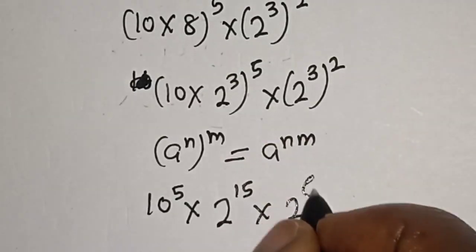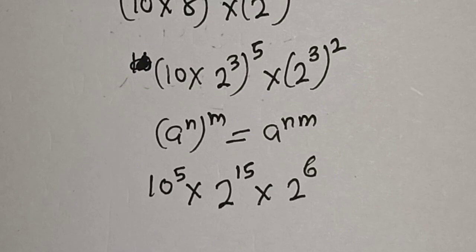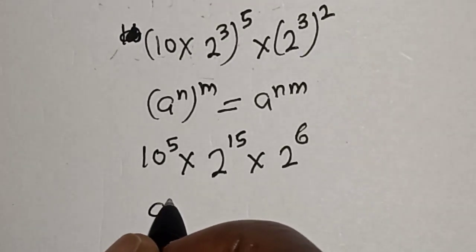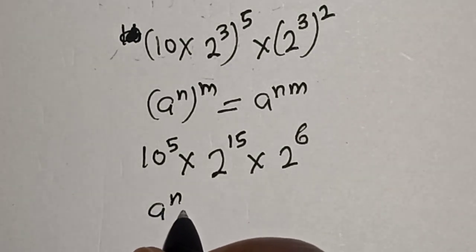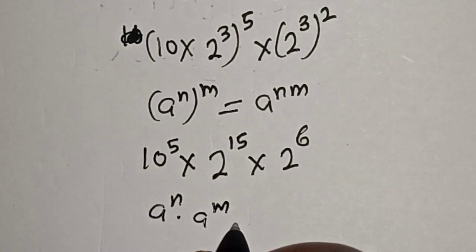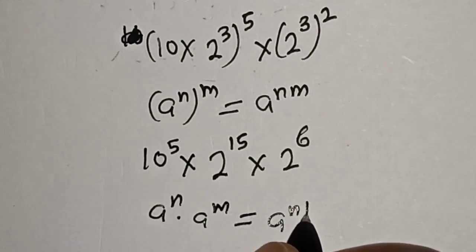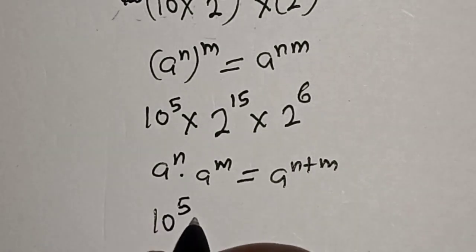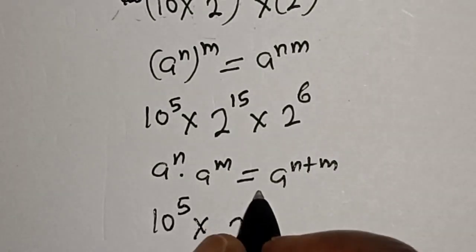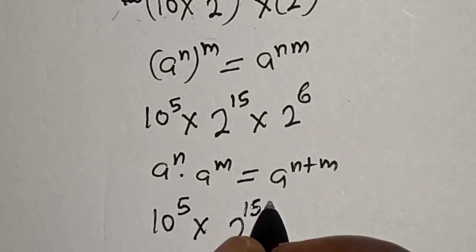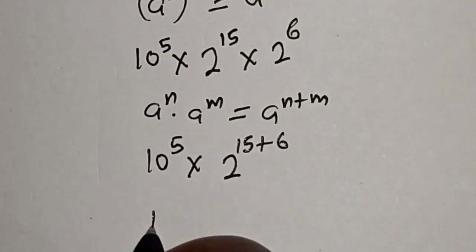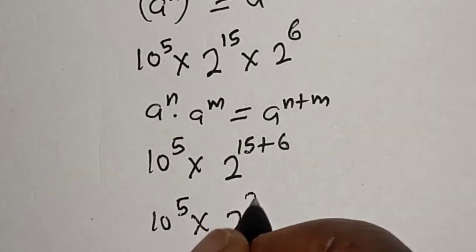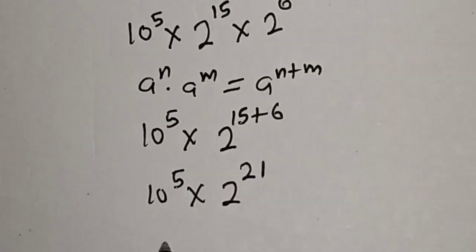That gives us 2 raised to power 6. Now remember this rule: a raised to power n multiplied by a raised to power m is equal to a raised to power n plus m. Then we have 10 raised to power 5 multiplied by 2 raised to power 15 plus 6, and this is 10 raised to power 5 multiplied by 2 raised to power 21.